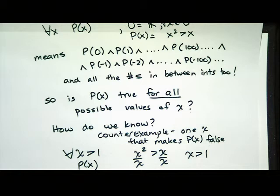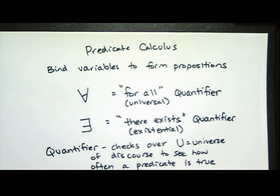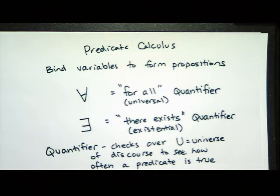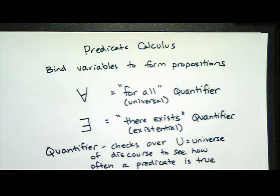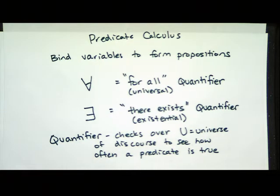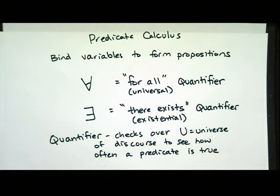We're not going to do huge proofs like that very much. For a little while, we're just going to look at predicates, see how often they're true, figure out how to translate some English into predicate calculus, and figure out how we can combine predicate calculus statements. To recap: predicate calculus helps us bind variables to statements so we can make predicates into propositions. The for all quantifier is called the universal quantifier, and the there exists quantifier is called the existential quantifier.